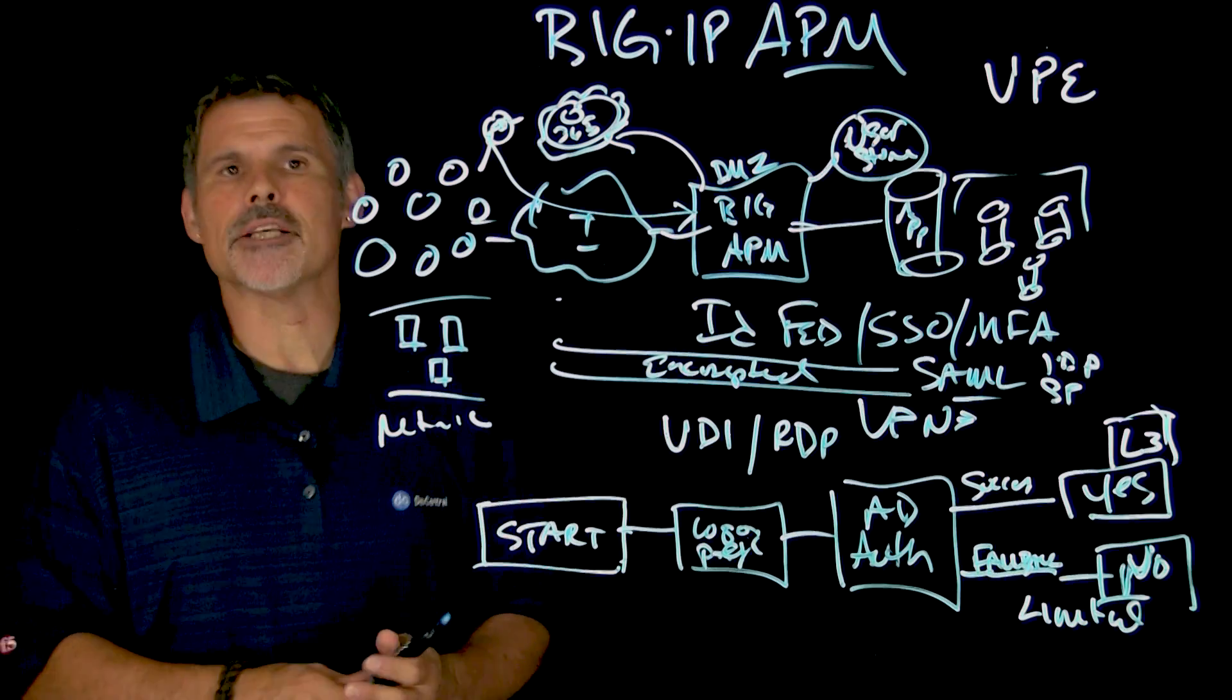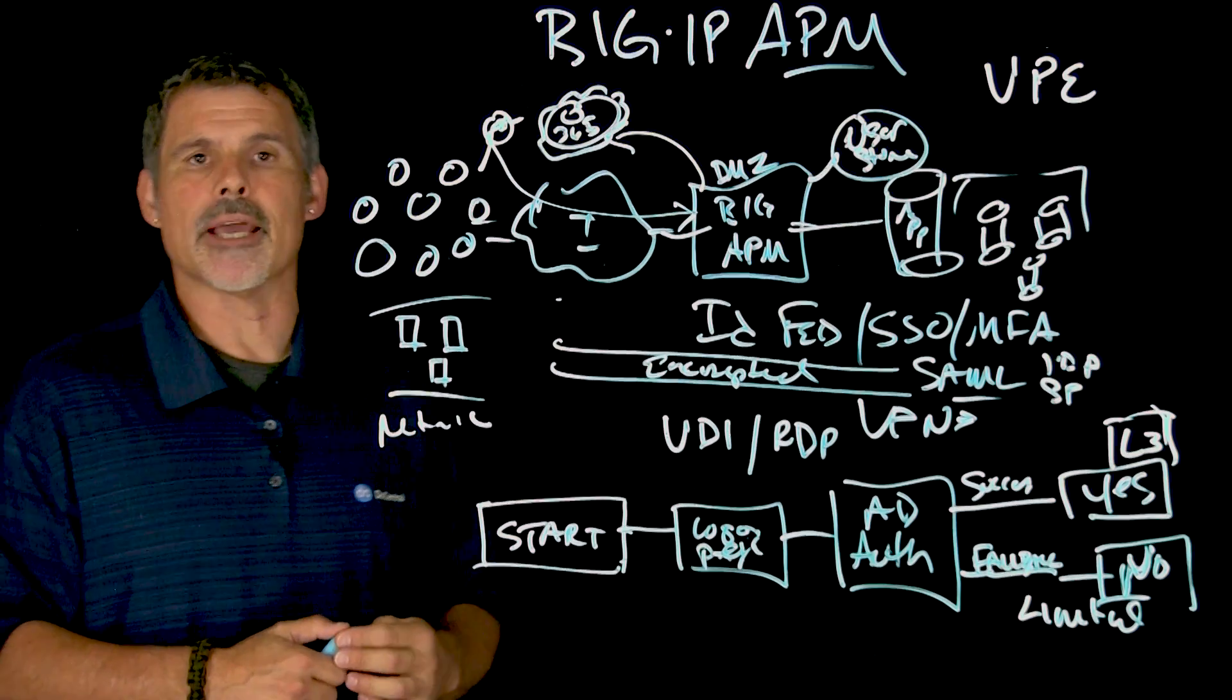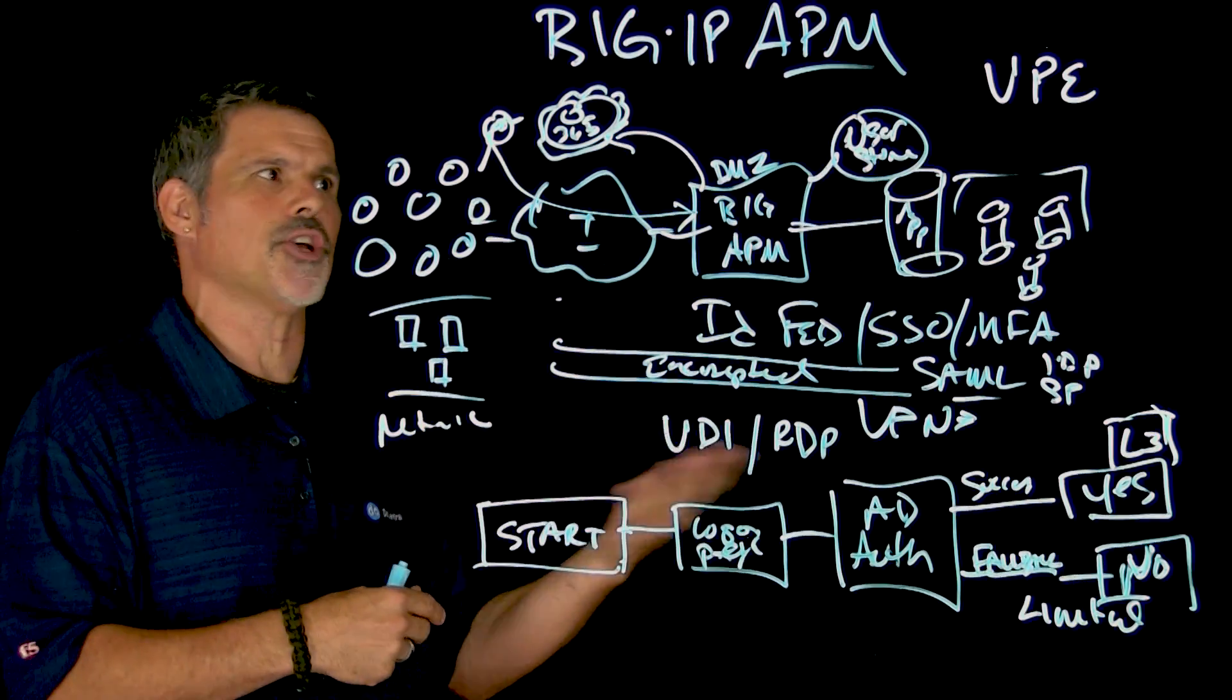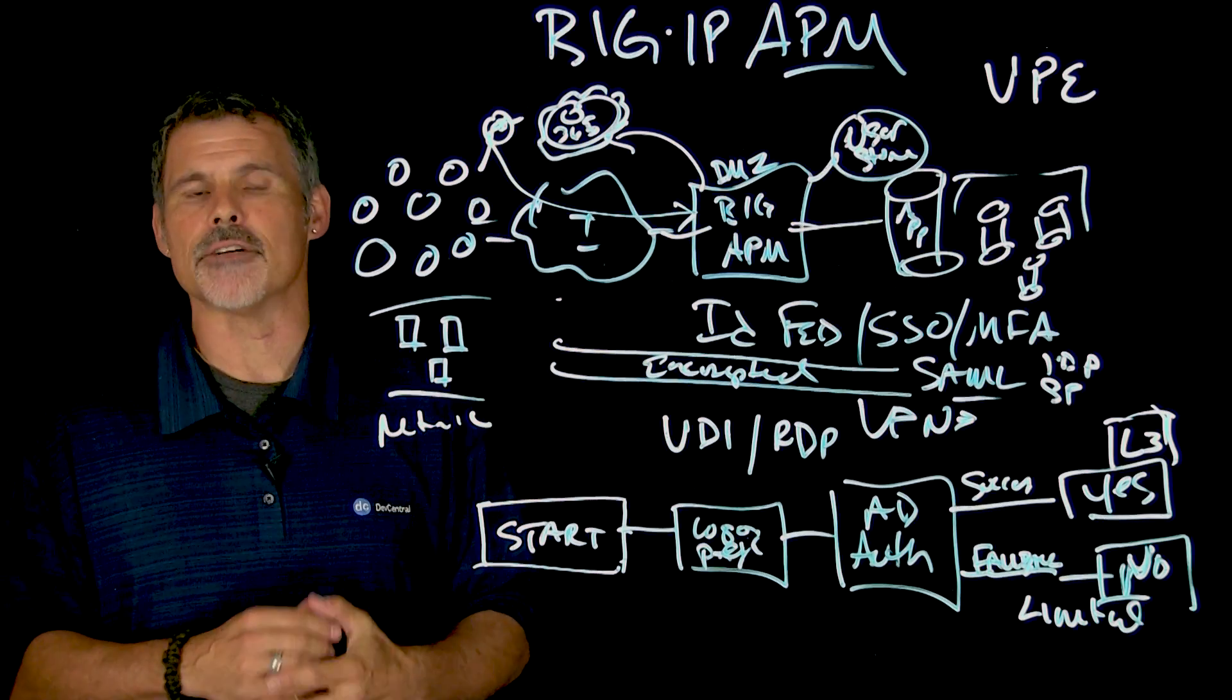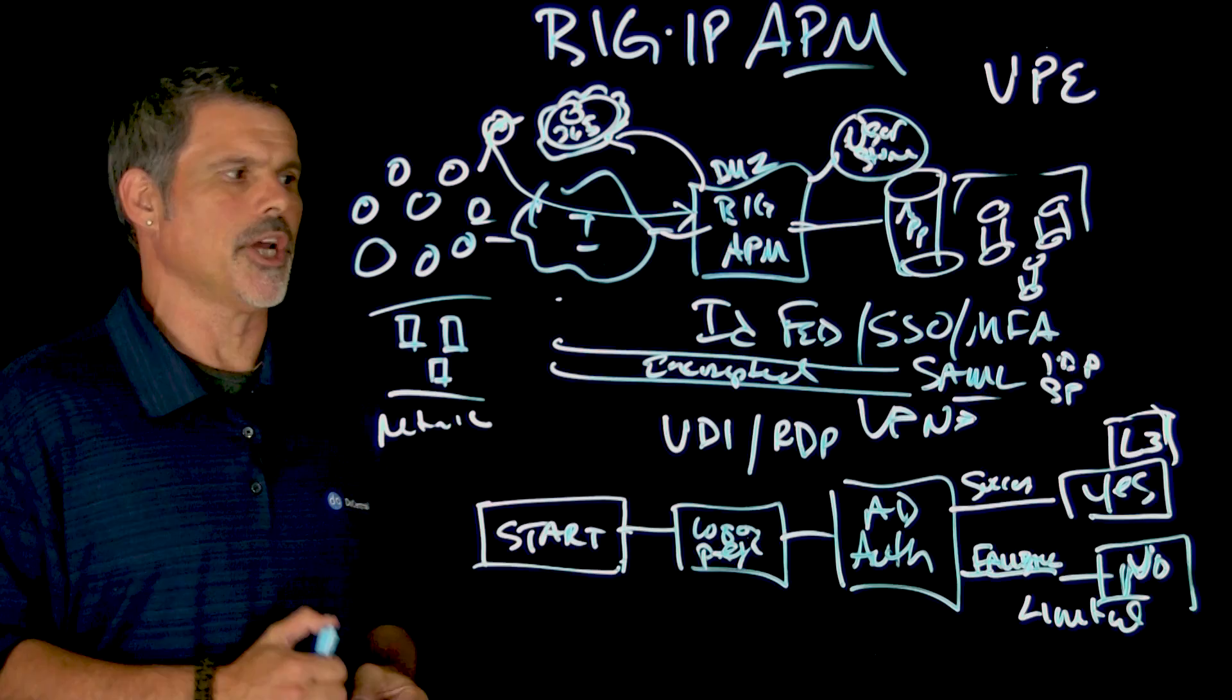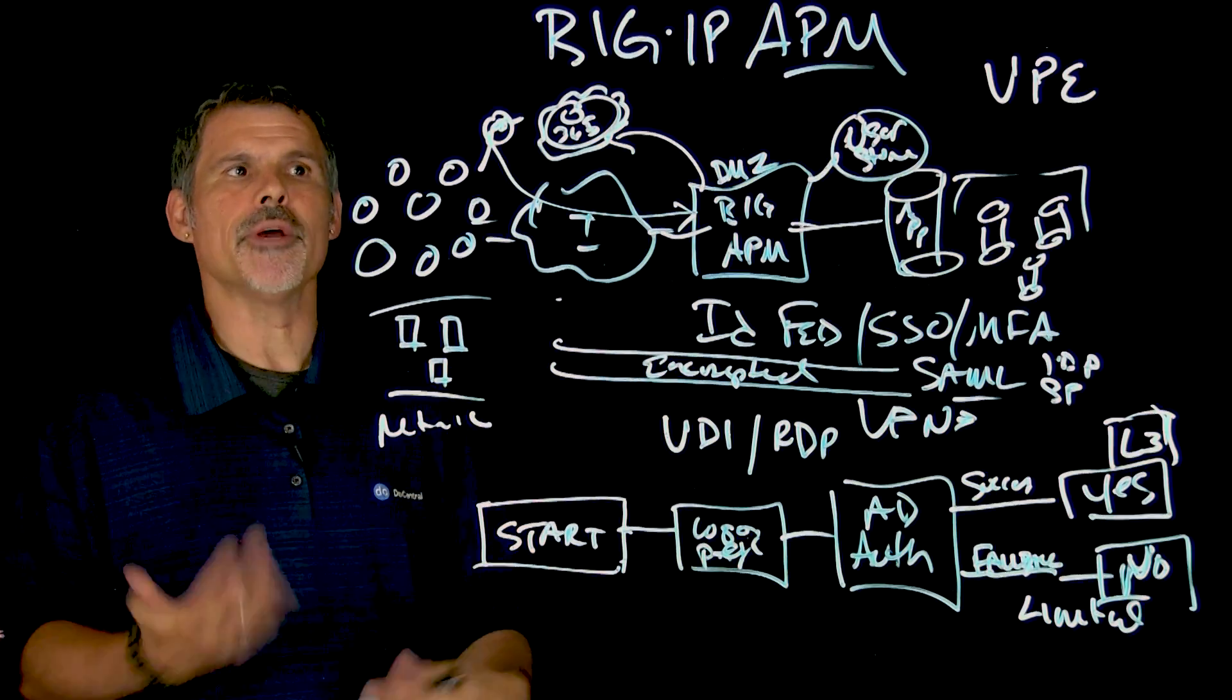Big IP Access Policy Manager, of course, can integrate with other Big IP modules like Big IP ASM, Application Security Manager, the web application firewall to provide a comprehensive security solution for your applications on the backend. And it also integrates...